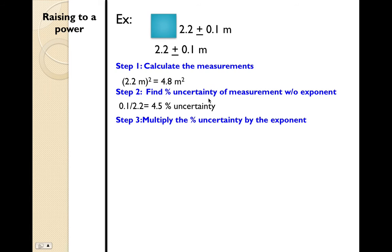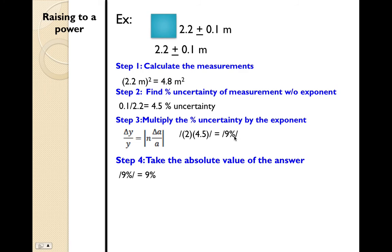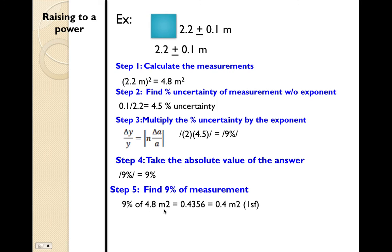Now multiply the uncertainty by the exponent, which is 2. So n equals 2, and the percentage uncertainty is 4.5%, giving you 9%. Take the absolute value — positive 9%. Then find 9% of the measurement 4.8, which equals 0.4356, or 0.4 meters squared after taking into account one significant figure. Write the final answer: 4.8 plus or minus 0.4 meters squared.